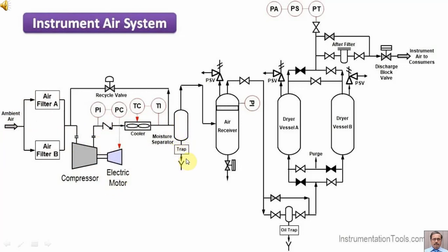The moisture in the air has been removed with the help of the moisture trap. Then the compressed air goes to the air receiver. From the air receiver it goes to the oil trap, from where the oil in the compressed air is removed. Then it passes through dryer vessel A and B, which work in sequence, one by one.